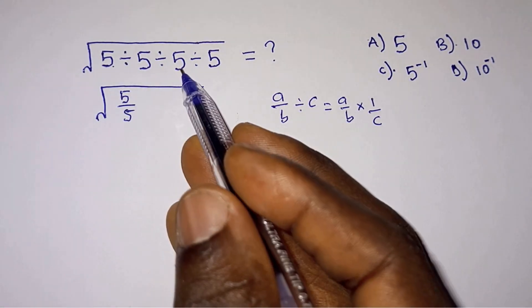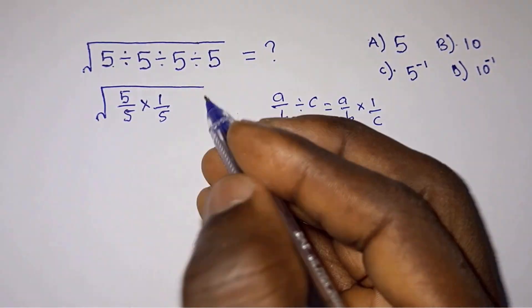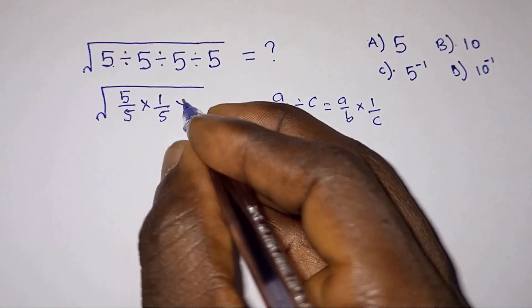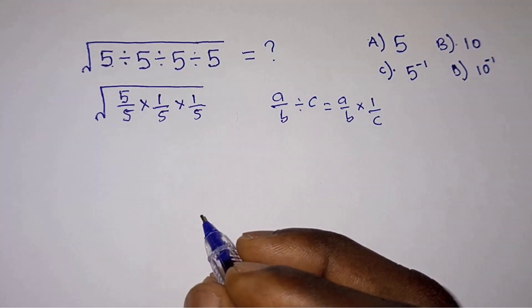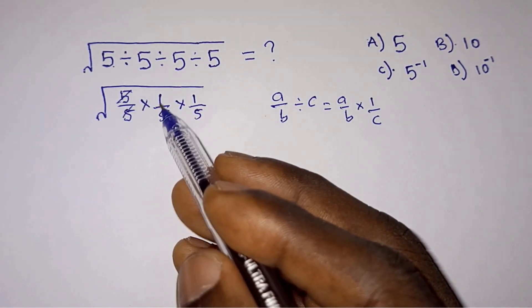So 5 divided by 5 divided by this 5 will be times 1 over 5, then divided by this 5 will also be times 1 over 5. And we'll evaluate this.